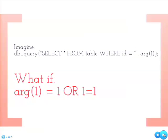Why does that matter? Imagine your site has node access control — the attacker can bypass it and see content they're not supposed to. You can also use select queries combined with a UNION to pull data from other tables. A scary example: in Drupal 6, using this kind of injection you could pull out all the pieces necessary to generate a one-time login link for any user on the site — specifically the last login time, the username, and the hashed password, which together make an MD5 hash that's the unique string in the one-time login link.